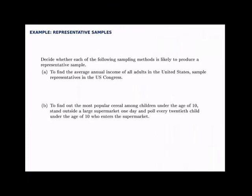Here we're looking at the idea of representative samples. If we're looking to measure something about a population, we want to gather a sample to measure, and we want to make sure the sample represents the population — that it looks similar to the population as a whole. We'll look at a couple examples. First, to find the average annual income of all adults in the United States, suppose we sampled representatives in the Congress of the United States. It turns out this is not a very representative sample.